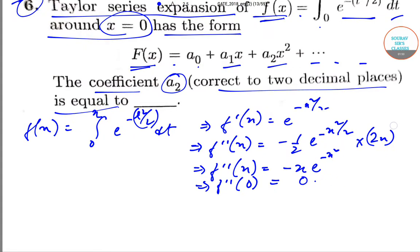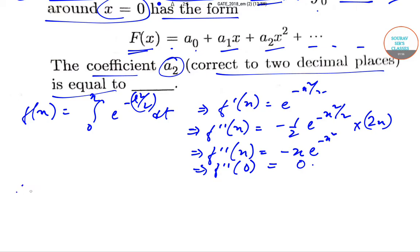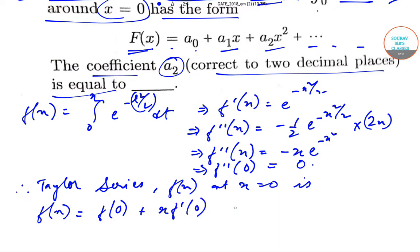Now let's find the Taylor series at x = 0. The Taylor series is given by f(x) = f(0) + x·f'(0) + (x²/2!)·f''(0) + ...